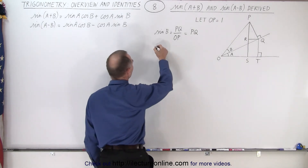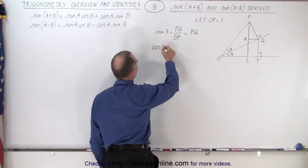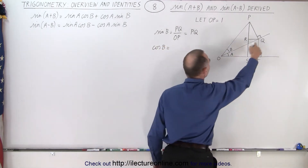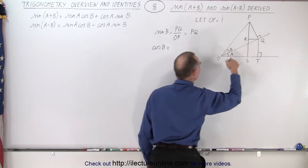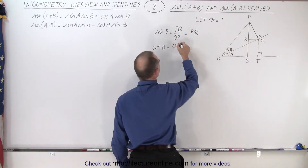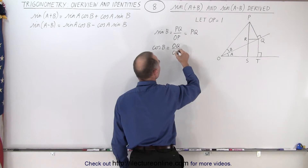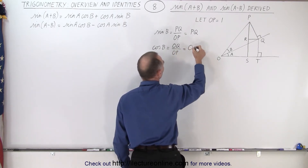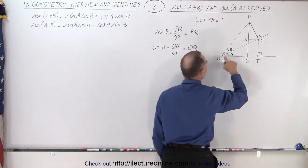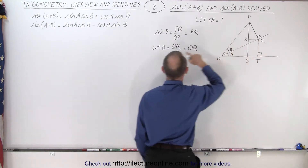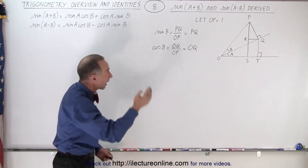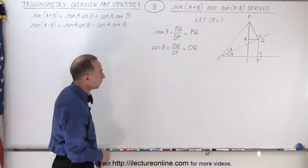How about the cosine of b? By definition, that's going to be equal to the adjacent side from O to Q, divided by the hypotenuse from O to P. Of course, O to P is equal to 1, so this is equal to OQ. So this length right here from O to Q, by definition, is the cosine of b, since we defined the hypotenuse OP to be equal to 1.